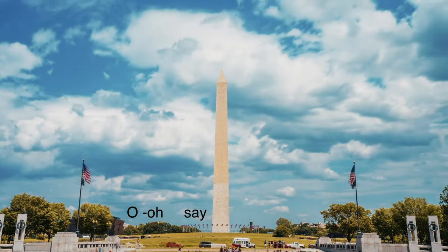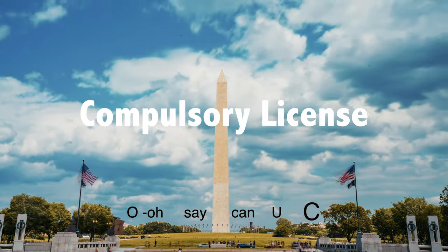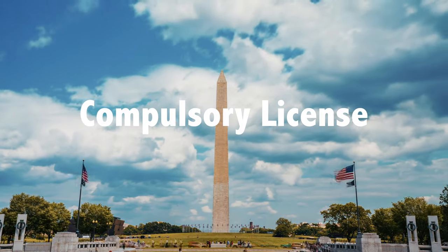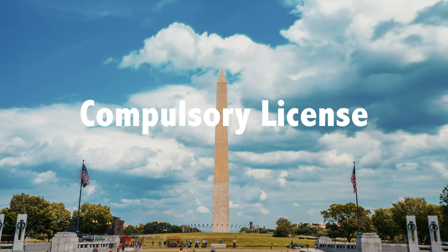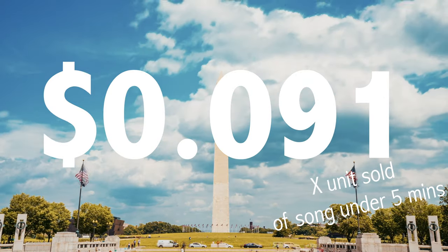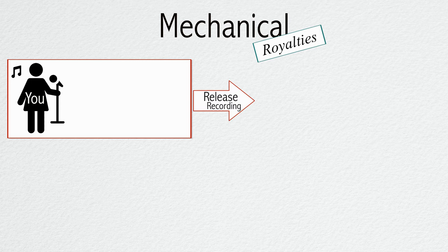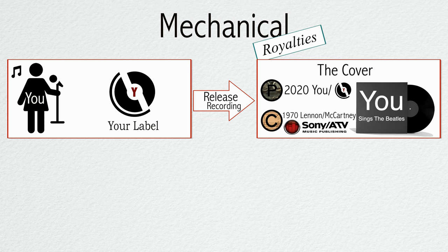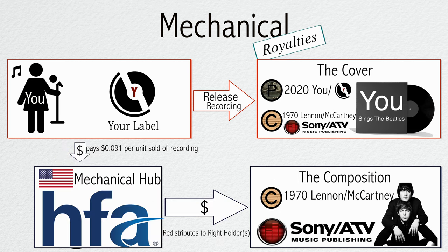In the US, for example, these licenses are set by the government as a compulsory license, which is currently set to $0.091 per unit sold for songs under five minutes. So if you are an artist and you want to release a cover of "Let It Be," you or your label will have to pay $0.091 per unit sold of your cover to Lennon-McCartney's publisher, Sony ATV, via the US mechanical hub, the Harry Fox Agency.